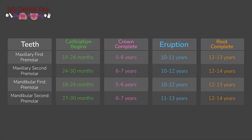Maxillary first premolars begin calcification at 18 to 24 months. The crown completes its formation at 5 to 6 years, the tooth erupts at 10 to 11 years old, and lastly the root completes formation at 12 to 13 years old.